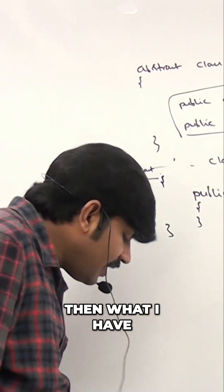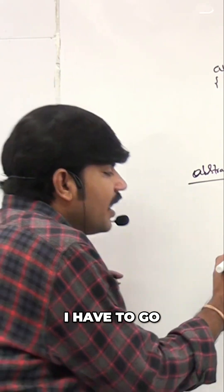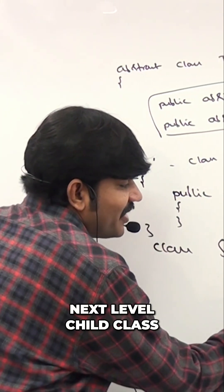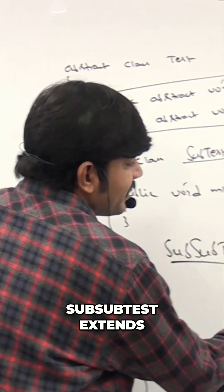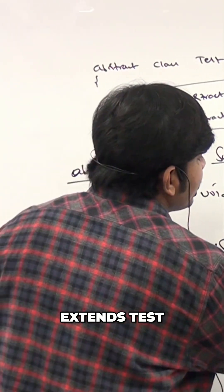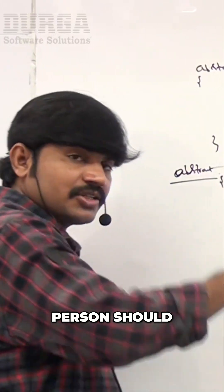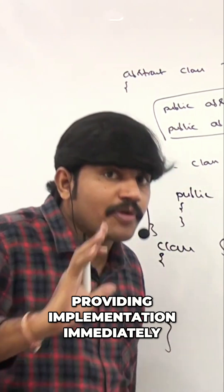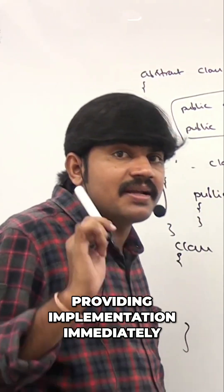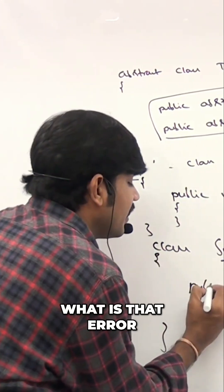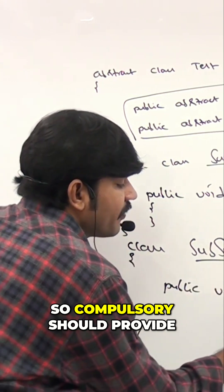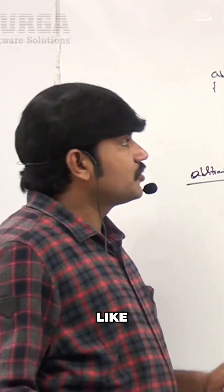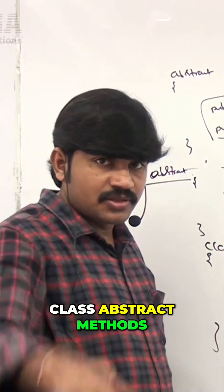So what do I have to go for? I have to go for the next level child class — SubSubTest, which extends SubTest. This class must compulsory provide implementation for the m2 method. If it's not providing the implementation, immediately we are going to get a compile error. So it is compulsory to provide implementation for m2 method — then it is valid.